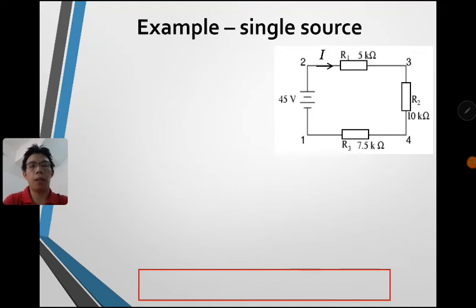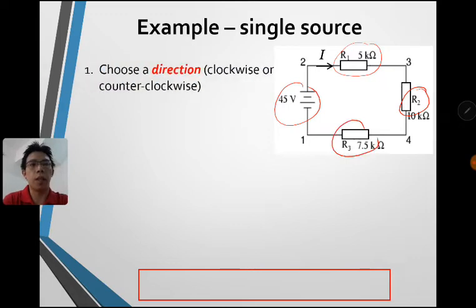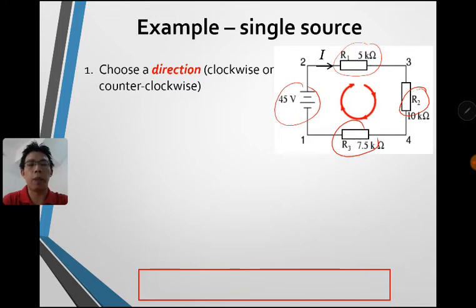Now we look at an example on how we use Kirchhoff's Second Law — how we construct a Kirchhoff's Second Law equation if you are given a circuit. First of all, when you see this kind of circuit and want to solve it using Kirchhoff's Second Law, you need to decide the direction you want. In some cases, choosing clockwise or anti-clockwise gives you ease when solving the problem, so deciding is very important.